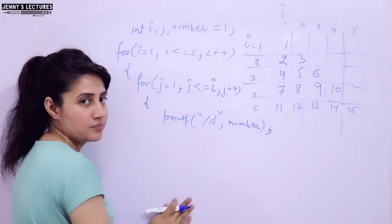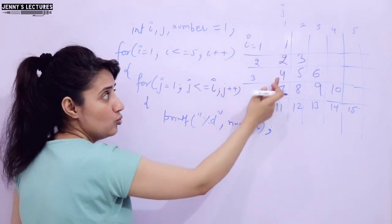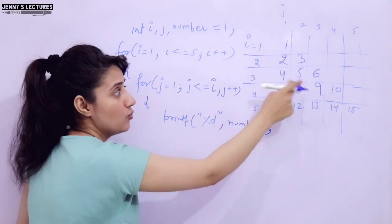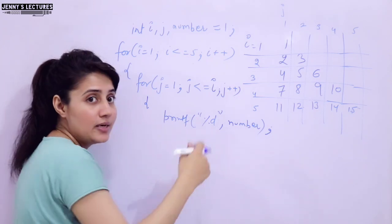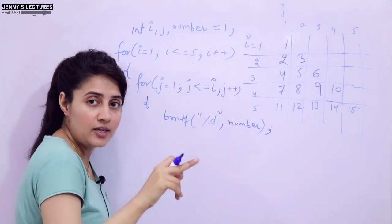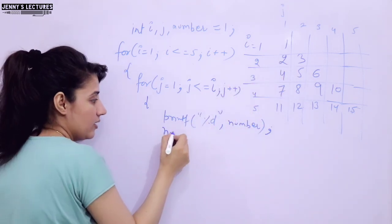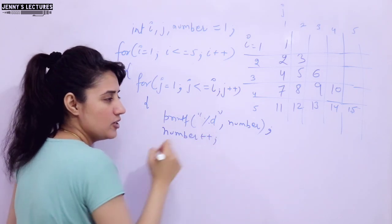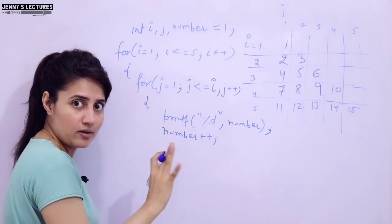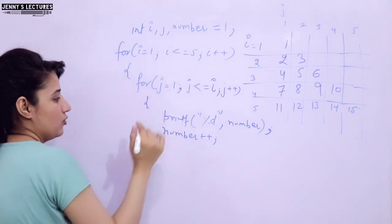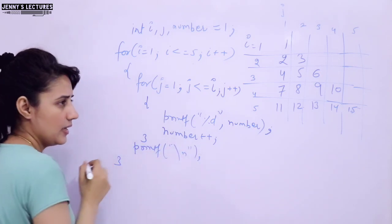But here I am printing from 1, so number should be printed. At first number is 1, so 1 would be printed. Next time 2 should be printed, then 3, then 4, then 5, then 6. So number should be incremented by 1 after printing, because the incremented value should be printed next time. After printing, write number++ or ++number — both are the same. And that's it for the inner loop. In the outer loop, add a newline with \n.